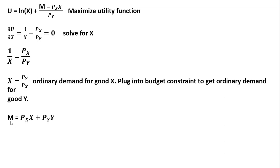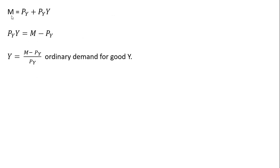Here is our budget constraint once again. If we plug in for x the price of good y divided by the price of good x and then solve for y — notice the price of good x terms cancel here. From the last slide we had m equals the price of good y plus the price of good y times units of y. Subtracting the price of good y from both sides and then dividing through by the price of good y gives us the ordinary demand for good y.